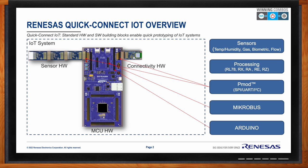We have sensors like temperature and humidity, gas, flow sensors, air quality, biometric — supporting PMOD, Microbus, Arduino, pretty much a lot of the main form factor devices that are out there in terms of community boards available today. Now, one of the crucial aspects of IoT designs is time to market. The more you can accelerate your design process, the better. So Brad, does Quick Connect IoT help me in this case?